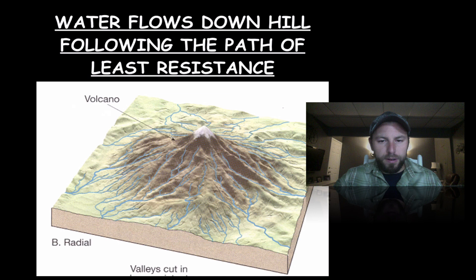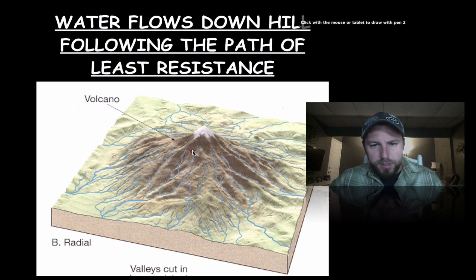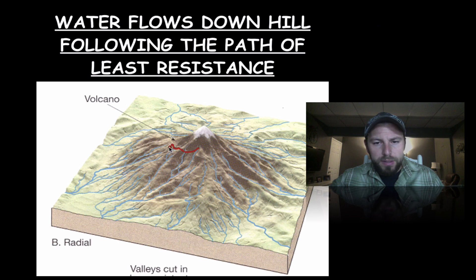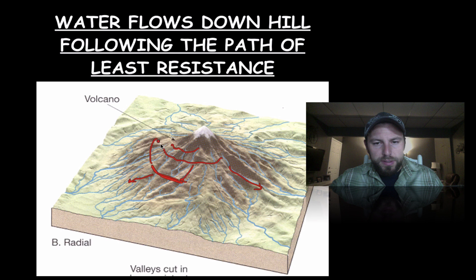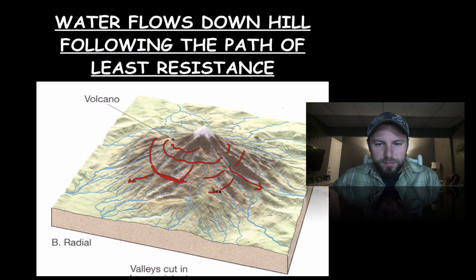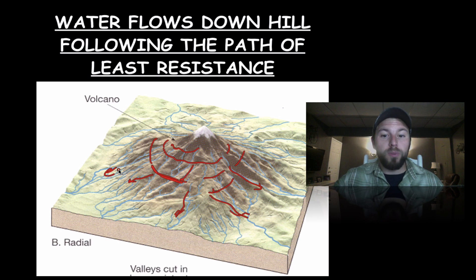Next up is the radial pattern. With radial, we have a central high peak and the water makes its way around it and flows off. We can basically see concentric circles that go around representing the stream drainage. The water comes out in all directions — it's basically like the spokes of a wheel.